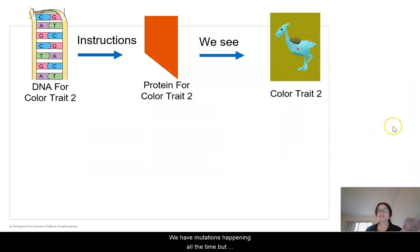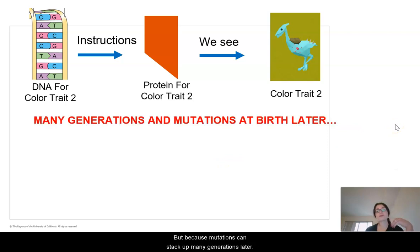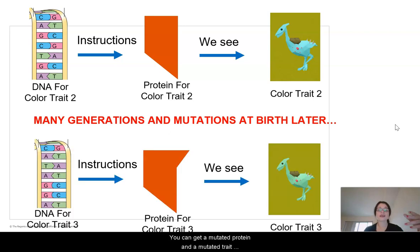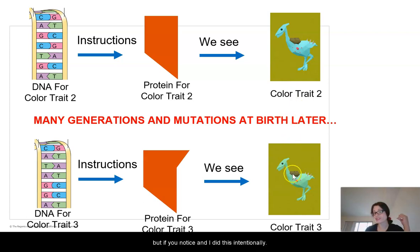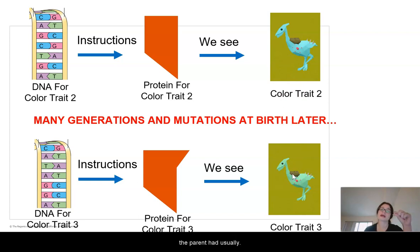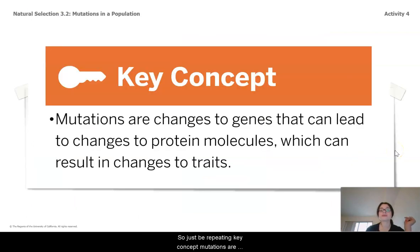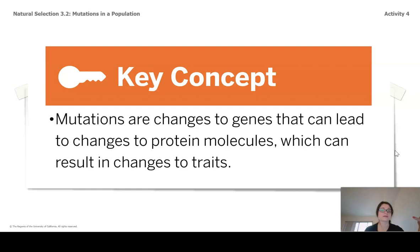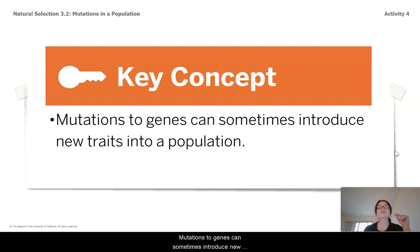Long and short, we have mutations happening all the time, but usually the change is teeny, teeny, tiny. But because mutations can stack up, many generations later you can get a mutated protein and a mutated trait. And that mutated trait is only a little bit different from what the parent had, usually. So, key concept: mutations are changes to genes that can change the protein molecules that can result in the change to a trait, and mutations to genes can sometimes introduce new traits to a population.